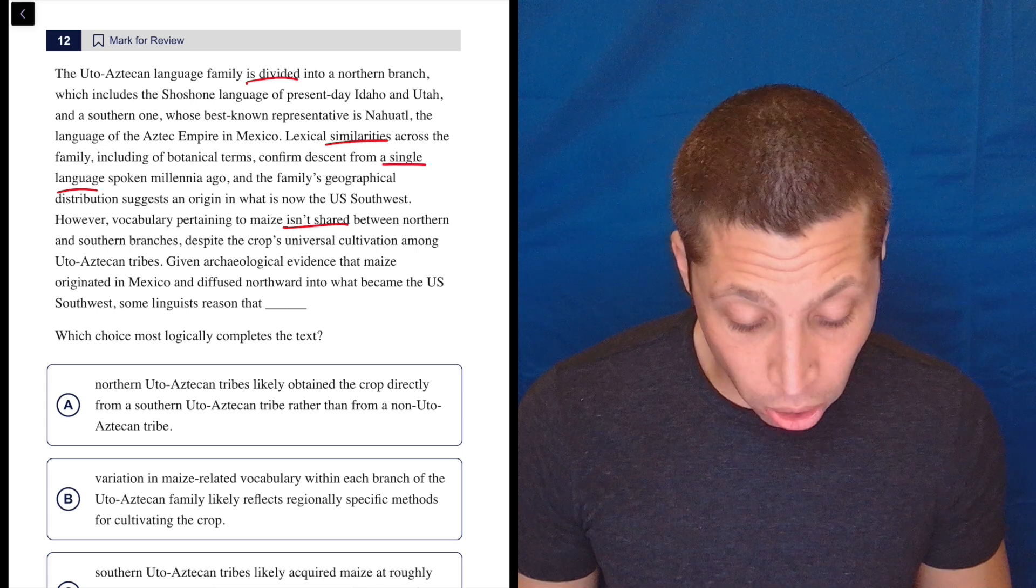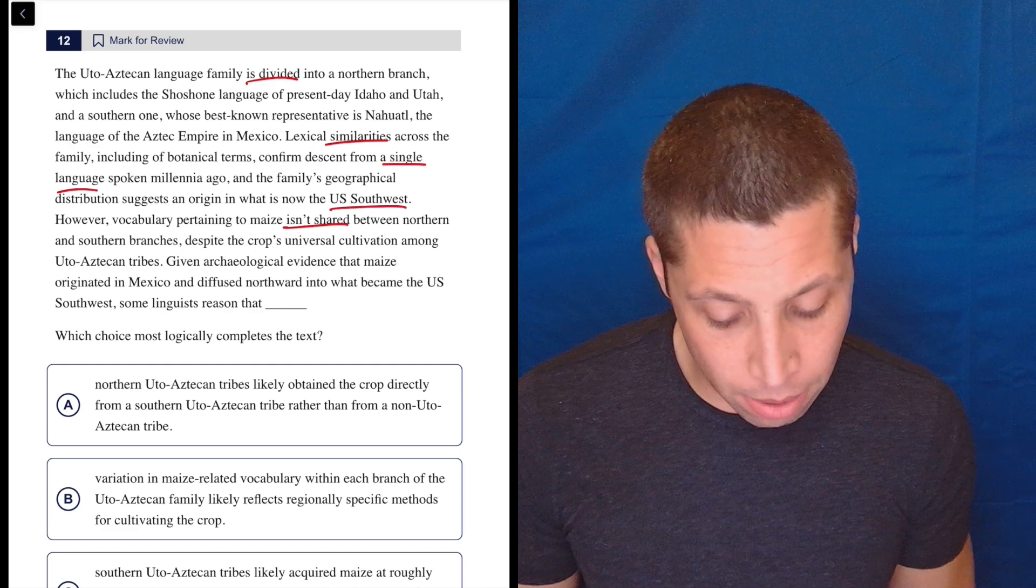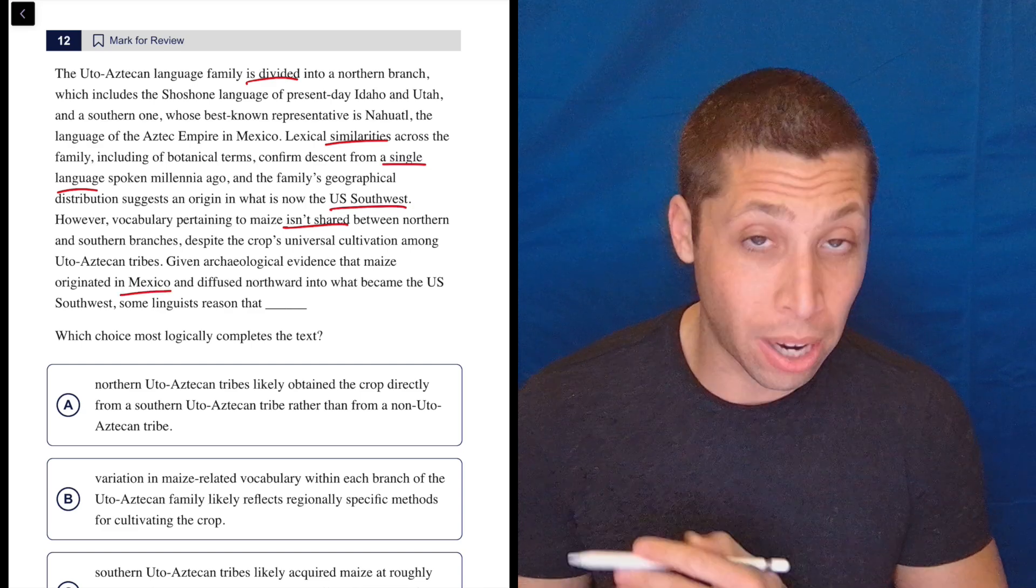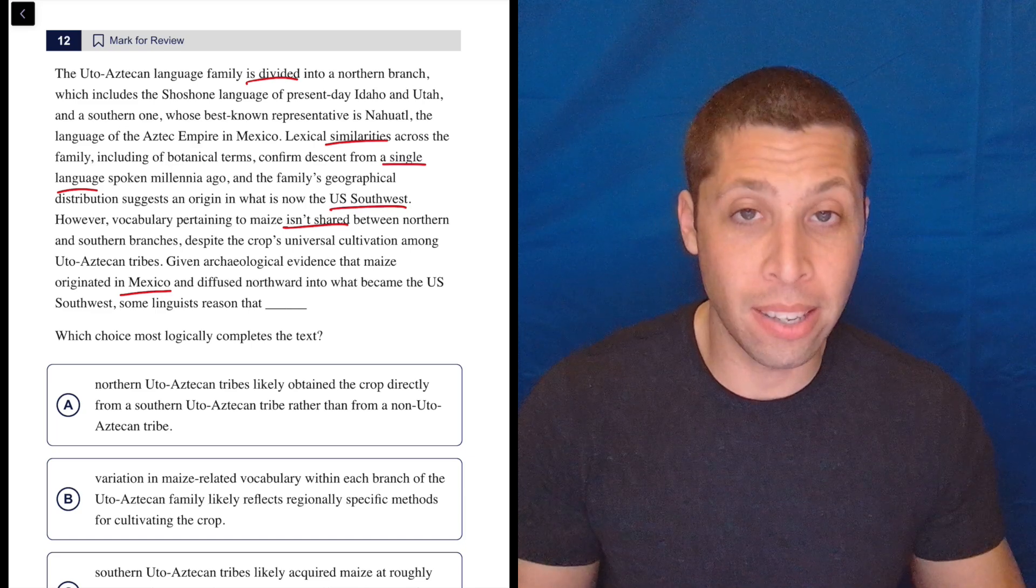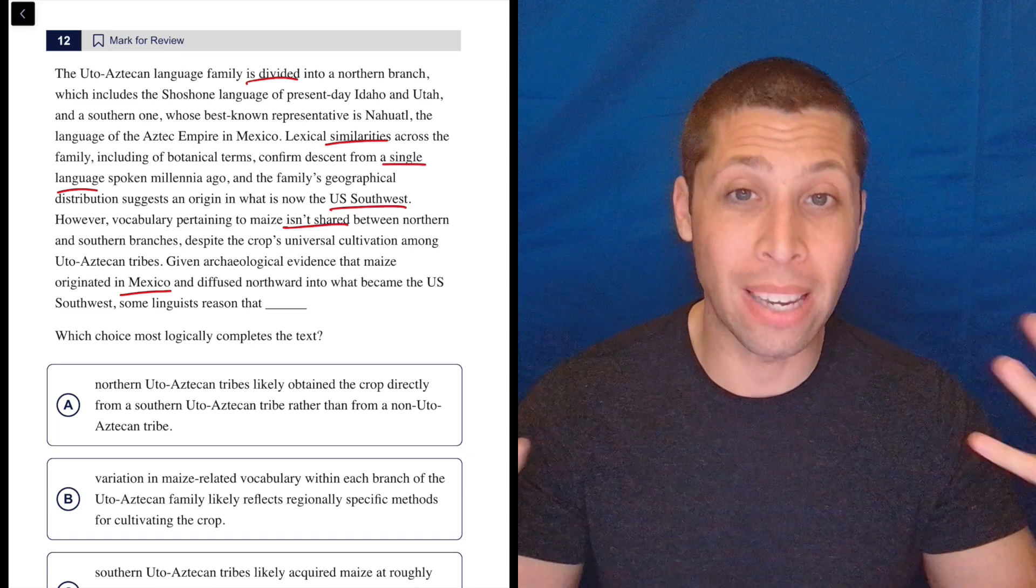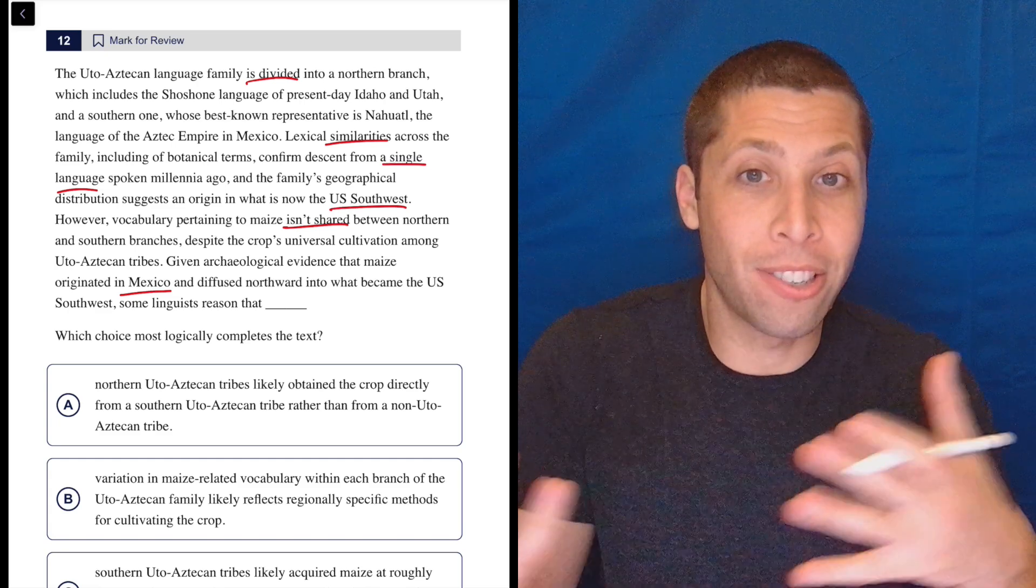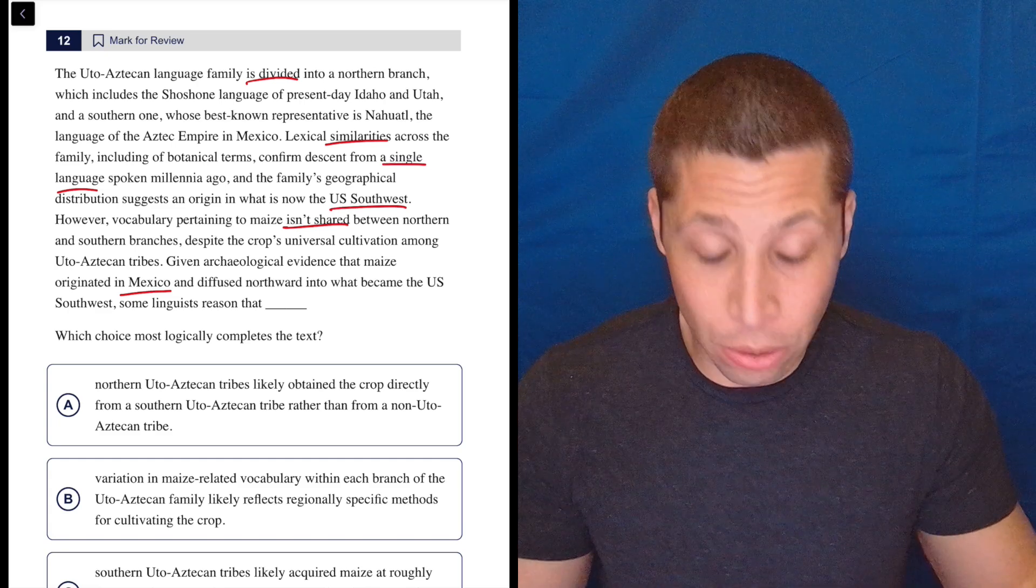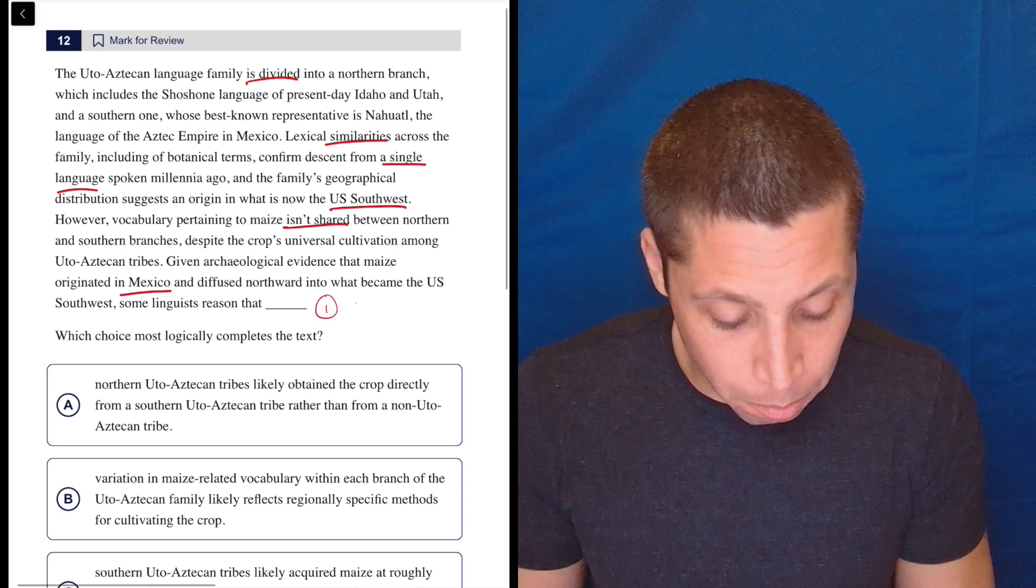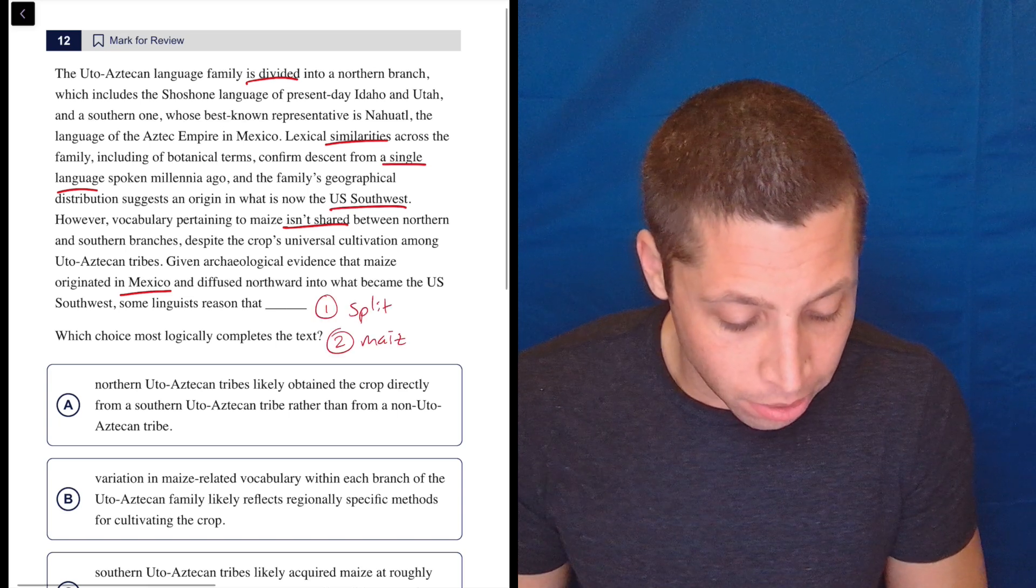Okay, so they say the language originated in the U.S. Southwest. The maize originated somewhere else. So why would they have different words for maize if they have the same word? It's the same basic language from everything else. Maybe they just got maize after they'd already split. Like that's literally just kind of what feels right to me. First, they split. Then they learned about maize.